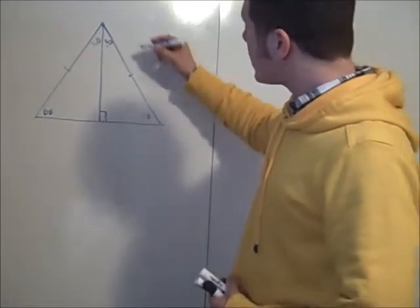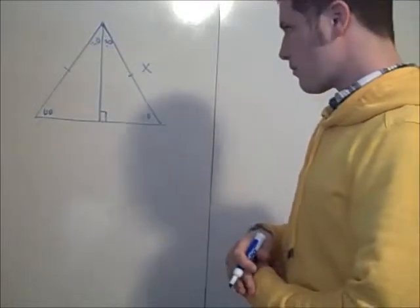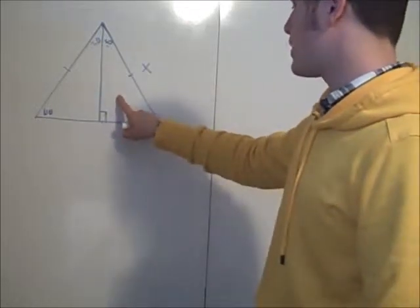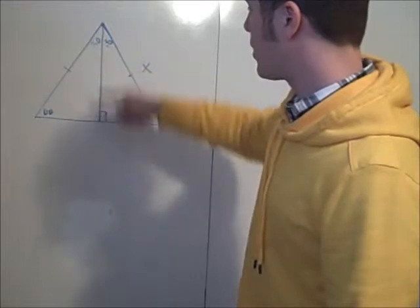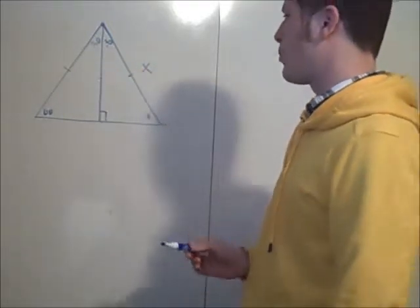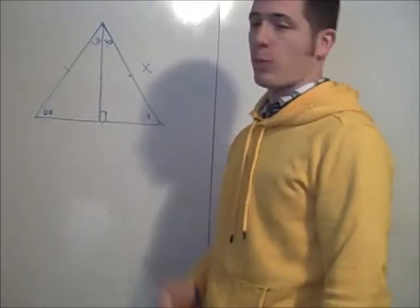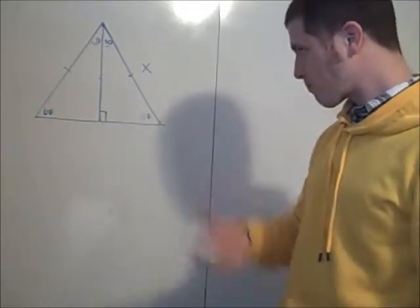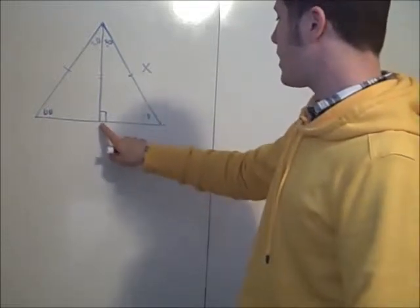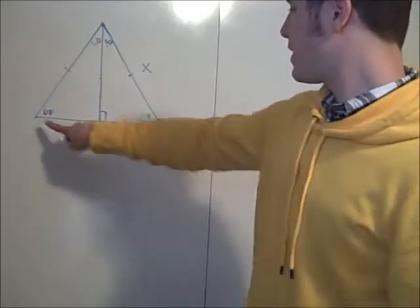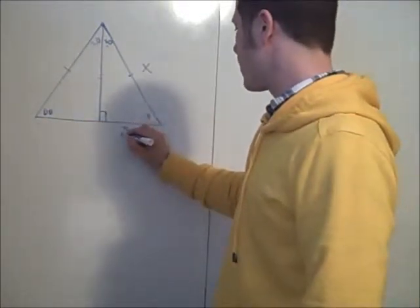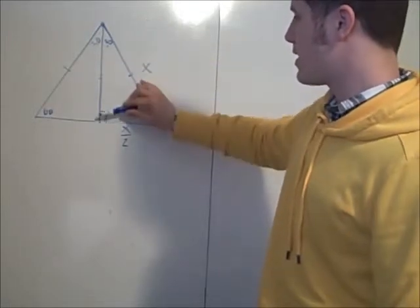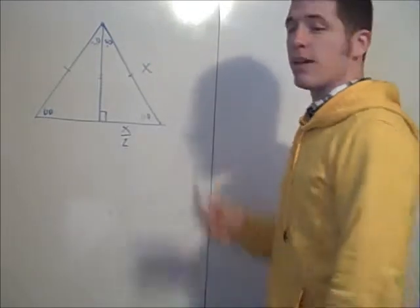Let's say that this equilateral triangle has a side length of x. It's important to note that the two smaller triangles are congruent by hypotenuse-leg: the perpendicular is congruent to itself by the reflexive property, and the hypotenuses are congruent because it's an equilateral triangle. So these two triangles are congruent by hypotenuse-leg, meaning this base length equals the other, and so it must be x over 2 — half the hypotenuse.